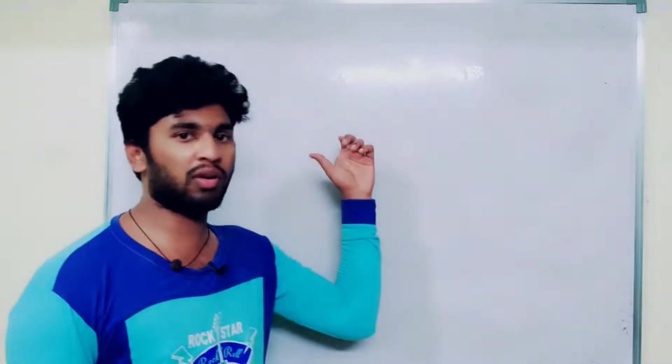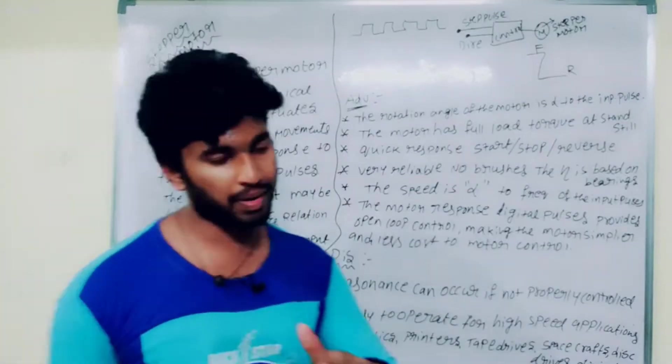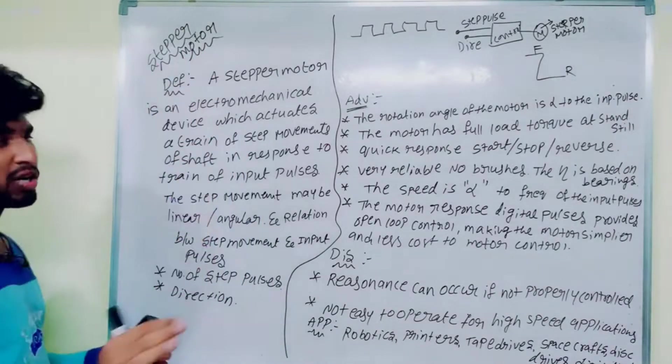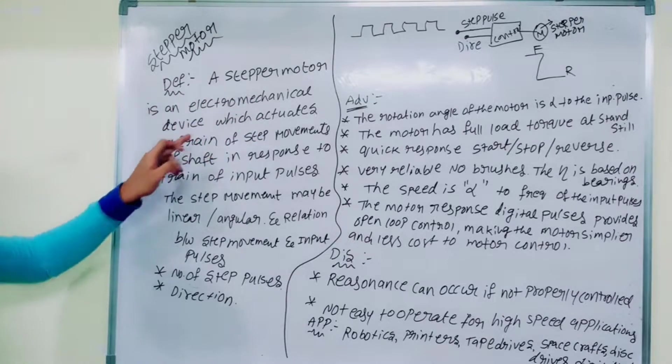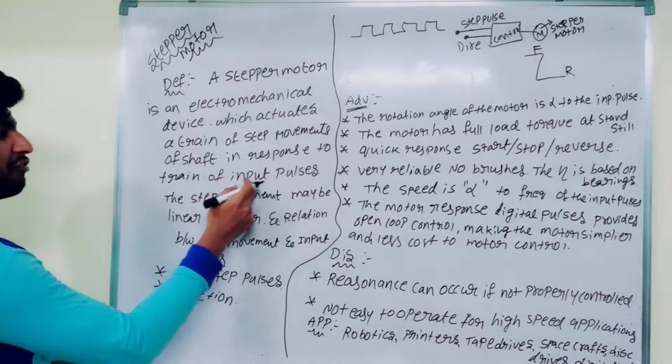I will explain the first definition. There is no separate definition of stepper motor — we have the definition of a simple operation and the definition of a stepper motor. A stepper motor is an electro-mechanical device which activates a train of step movements of the shaft in response to a train of input pulses.